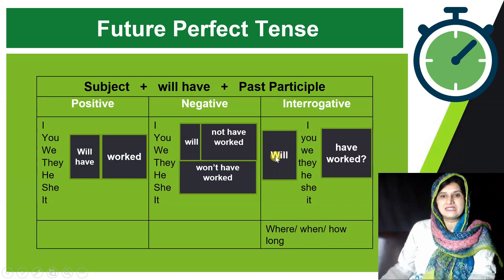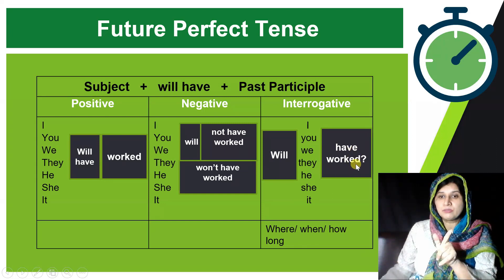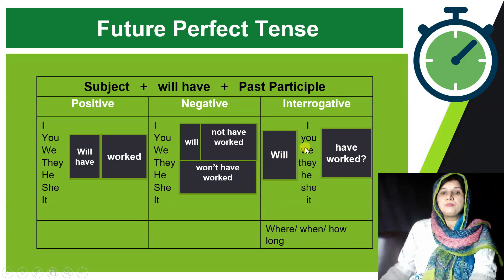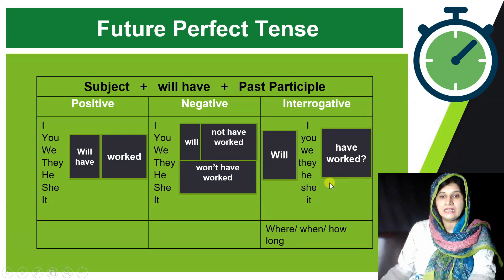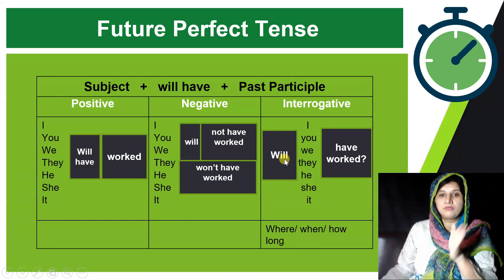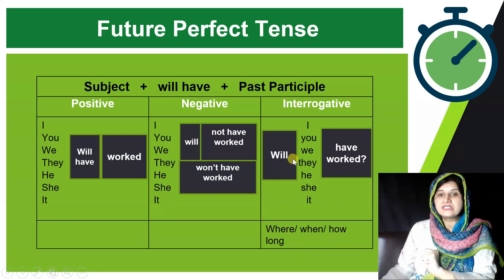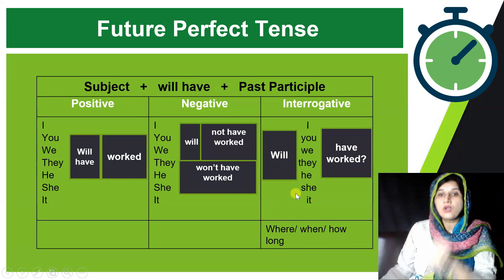In interrogative sentences, the helping verb 'will' comes first, then subject, then 'have,' then past participle and a question mark. For example: 'Will I have worked?' 'Will they have worked?' 'Will she have worked?' For WH questions, add the question word before 'will': 'Where will I have worked?' 'When will I have worked?' 'How long will I have worked?'